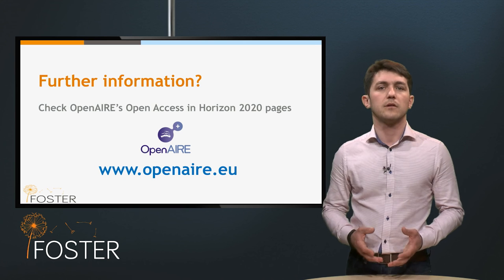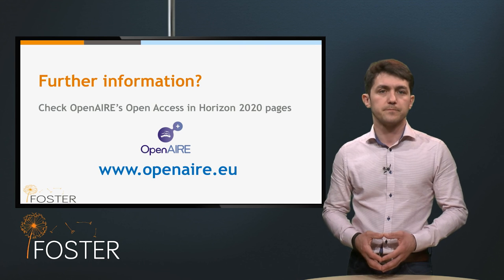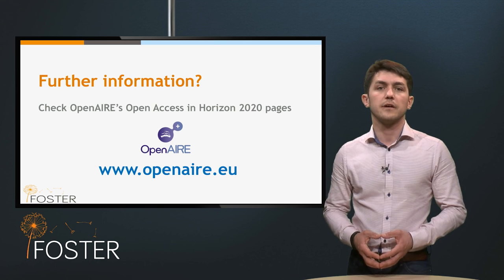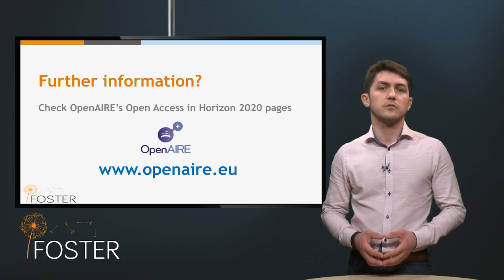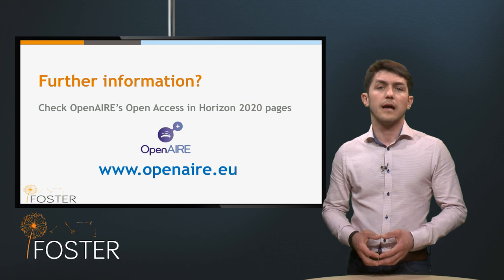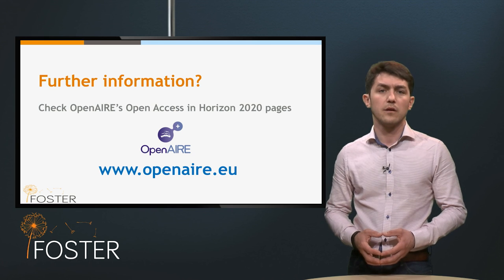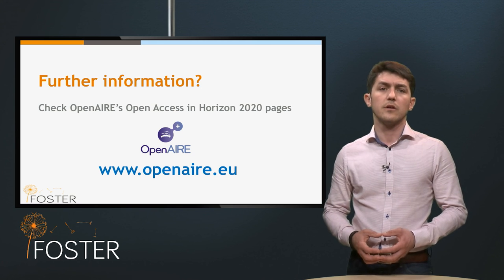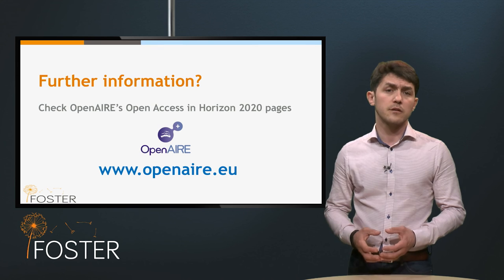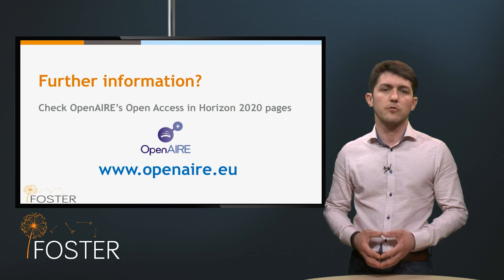Where can I read and learn more about this? You can find further and detailed information on the Open Access in Horizon 2020 pages on the OpenAIRE website, or read Article 29 of your grant agreement.